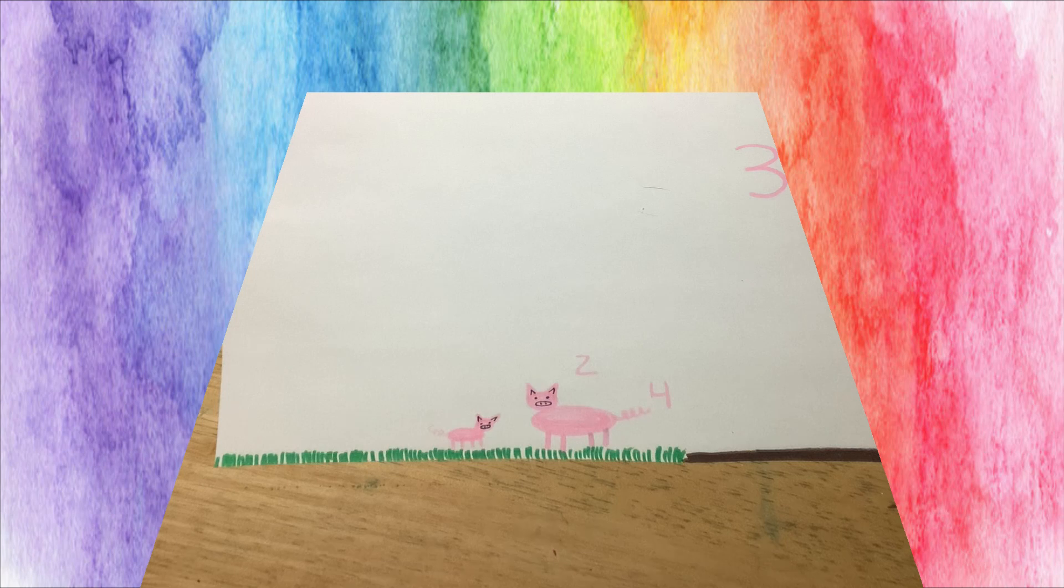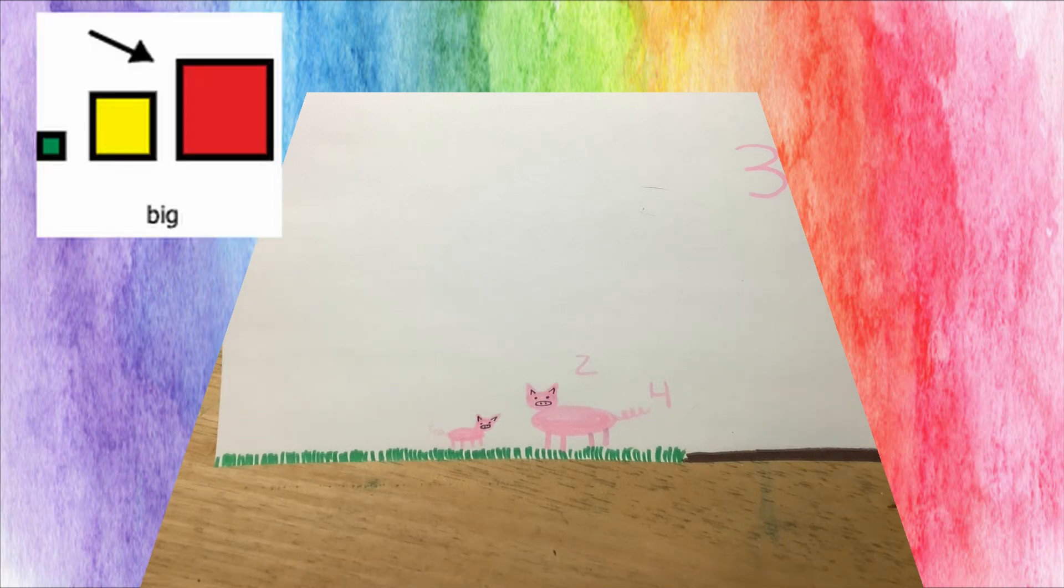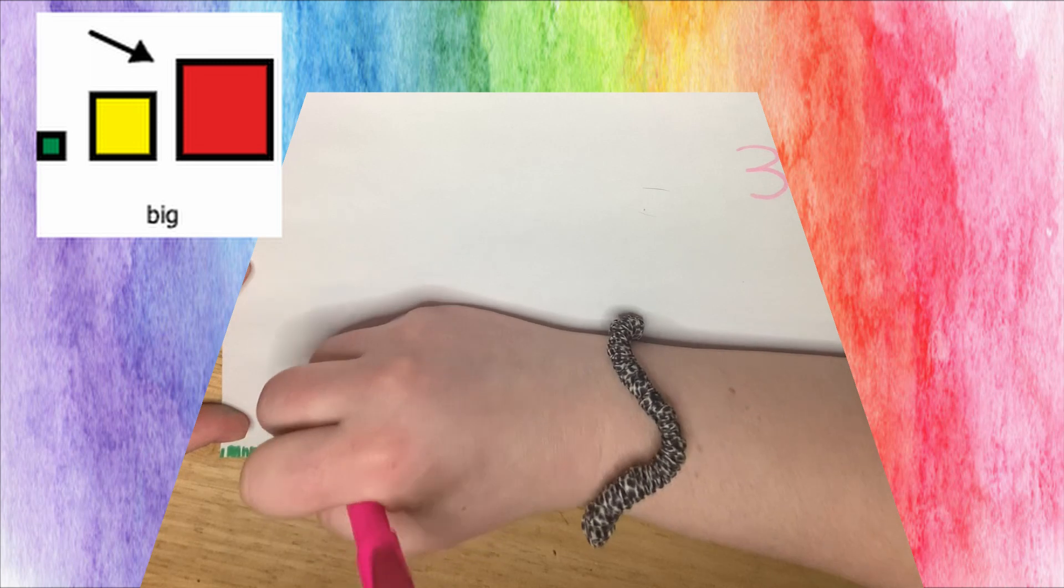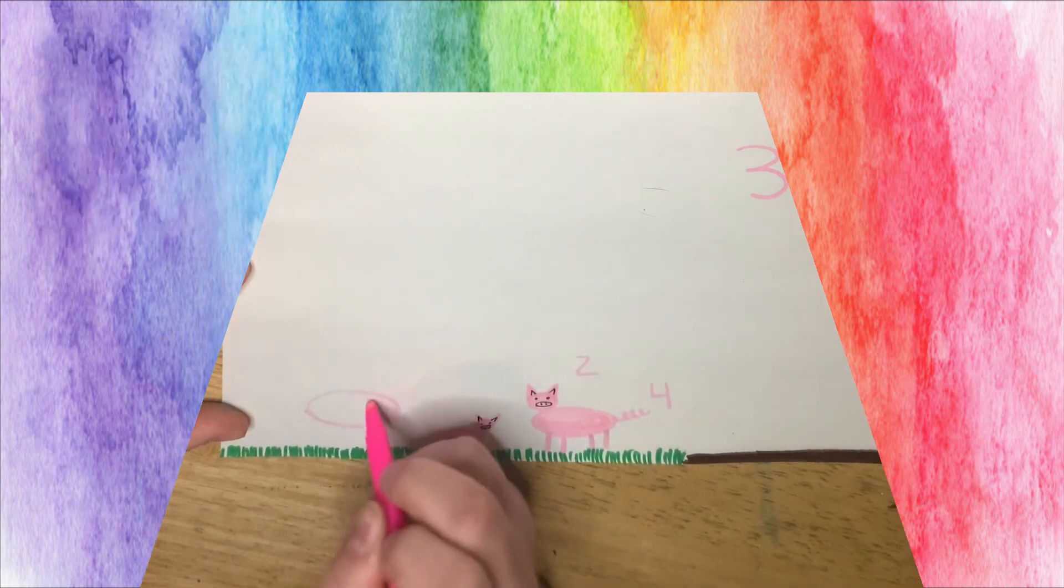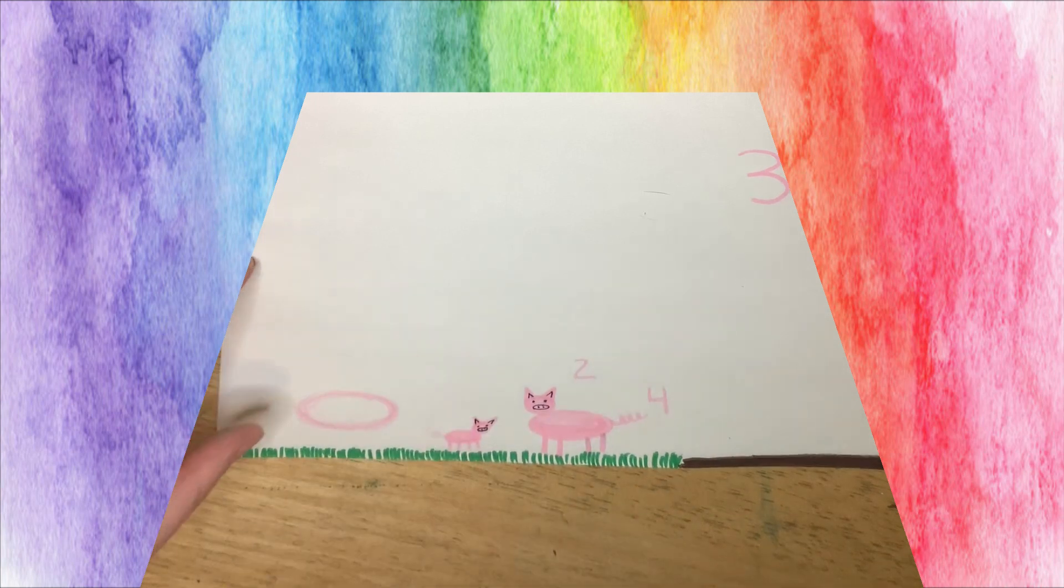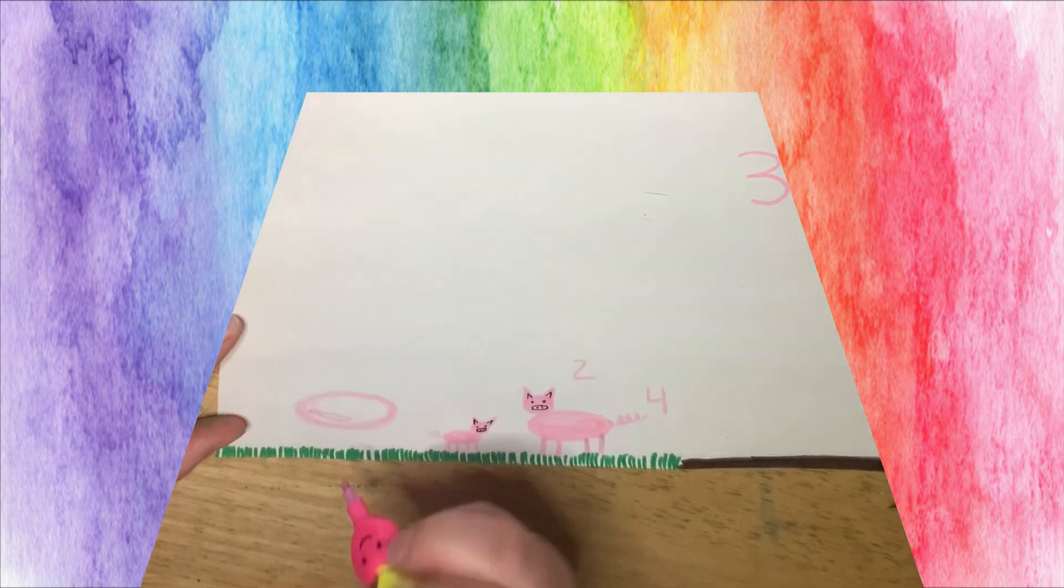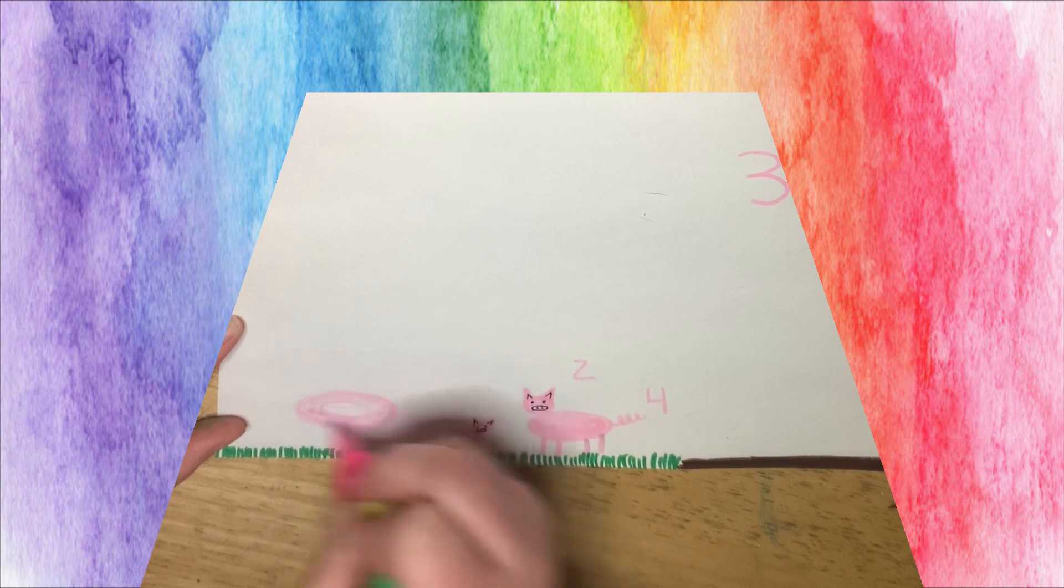And now we're going to draw our big pig. Big oval. My marker's running out, so I'm going to use my other pink. I've drawn my big, big oval for my big pig.